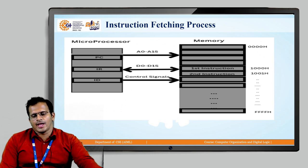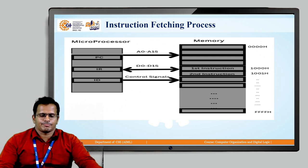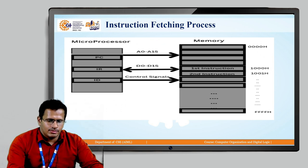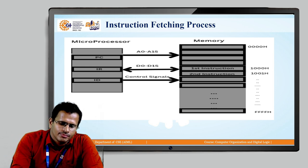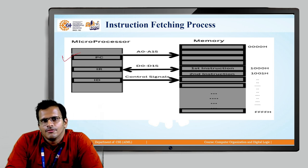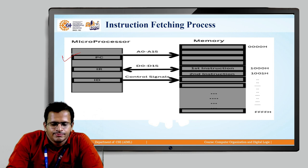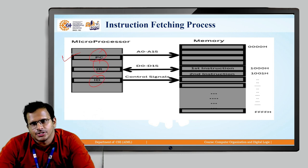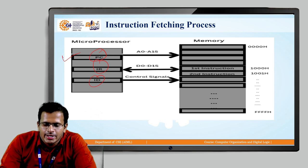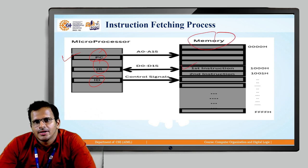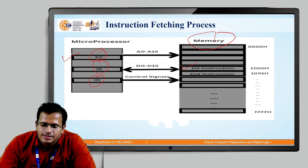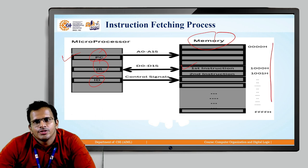In this diagram we will be seeing the three main components of the microprocessor: the PC, which represents the Program Counter; IR, which represents the Instruction Register; and ID, which represents the Instruction Decoder. The memory has 8-bit data, represented inside the boxes, and the address location ranges from 0000H to FFFFH.